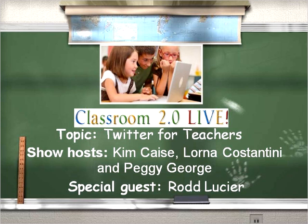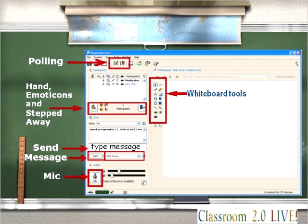What we'd like you to do is share a little bit about yourself in a moment. And if you're new to Illuminate, we'll be asking polling questions. You'll be clicking on the green check in your menu at the top to indicate yes or agree with that statement, or clicking on the red X to indicate that you disagree or you're answering no to that question.